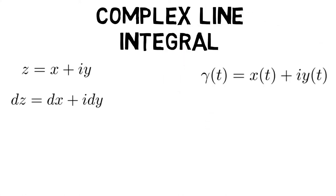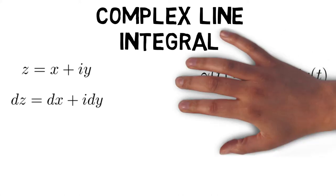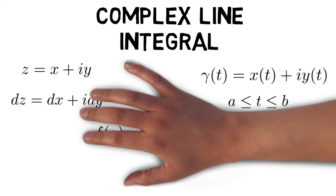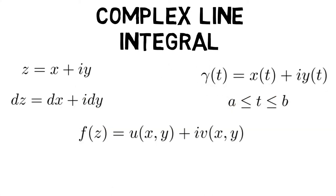A curve in this plane is given by gamma of t equals x of t plus i y of t, defined for closed interval a comma b. A complex function f of z equals u of x comma y plus i v of x comma y.